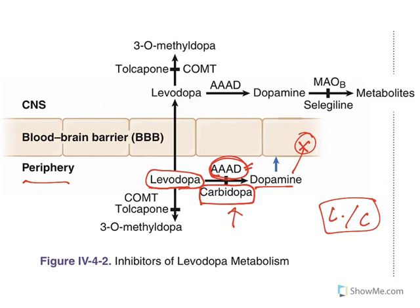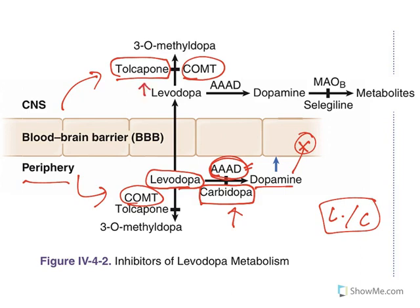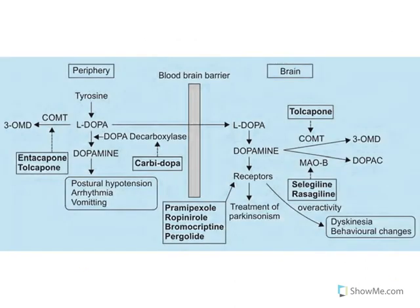Levodopa, dopamine, and related compounds can be metabolized by catechol-O-methyltransferase (COMT). COMT is inhibited by tolcapone and entacapone. COMT is present in the periphery as well as in the CNS. When you reduce the metabolism, the levels of levodopa will be increased and dopamine levels will be increased. Additionally, monoamine oxidase also metabolizes dopamine, and that is inhibited by selegiline and rasagiline. So we have enzyme inhibitors: decarboxylase inhibitors like carbidopa, COMT inhibitors like tolcapone and entacapone, and MAO inhibitors like selegiline and rasagiline.